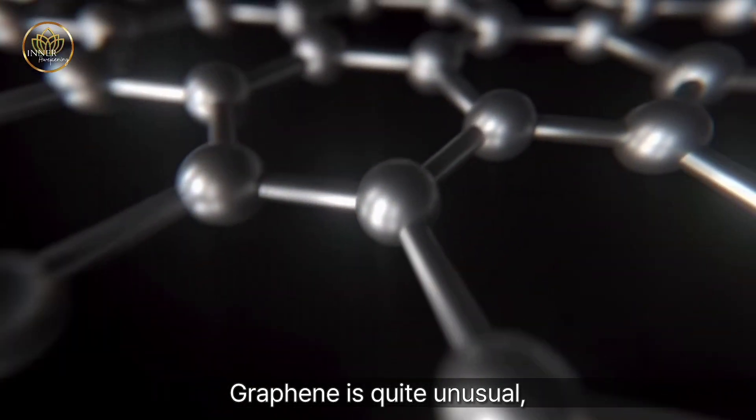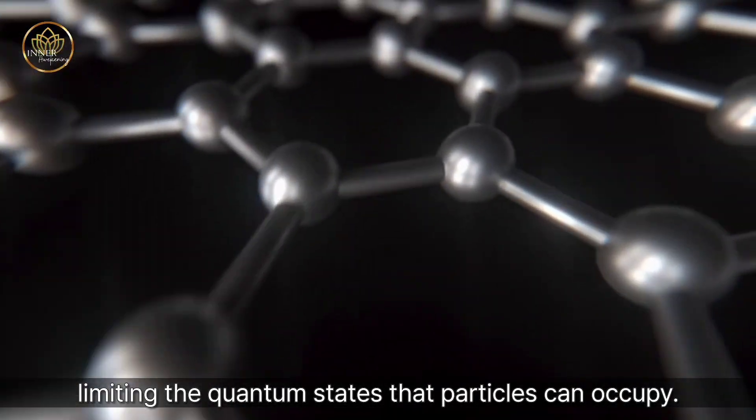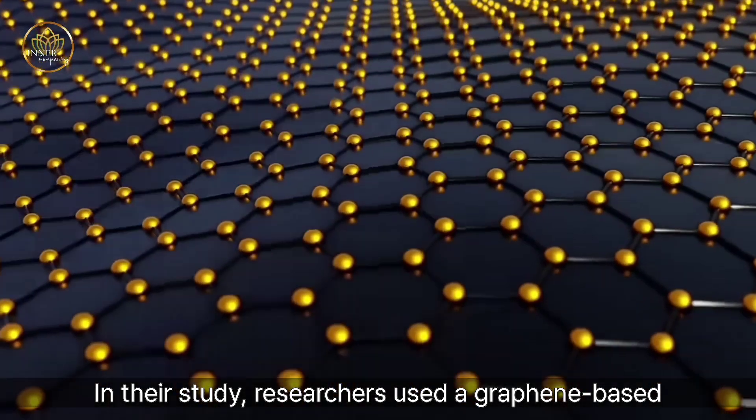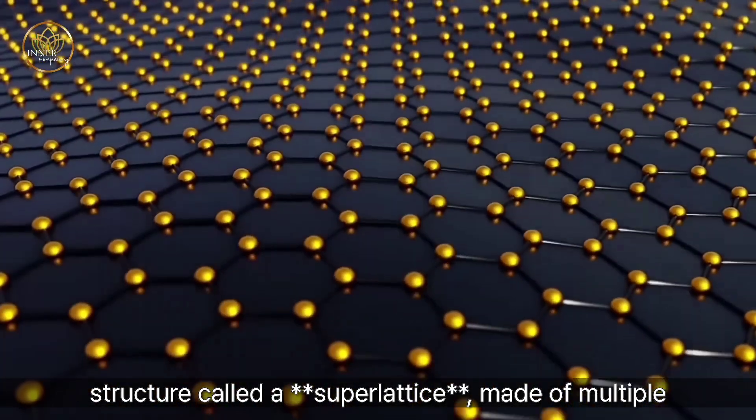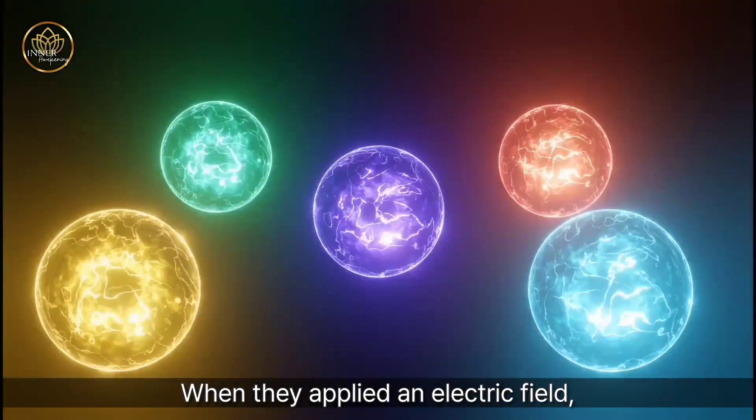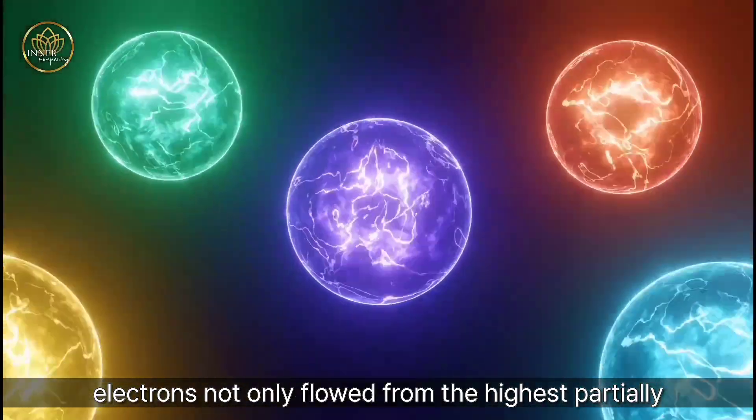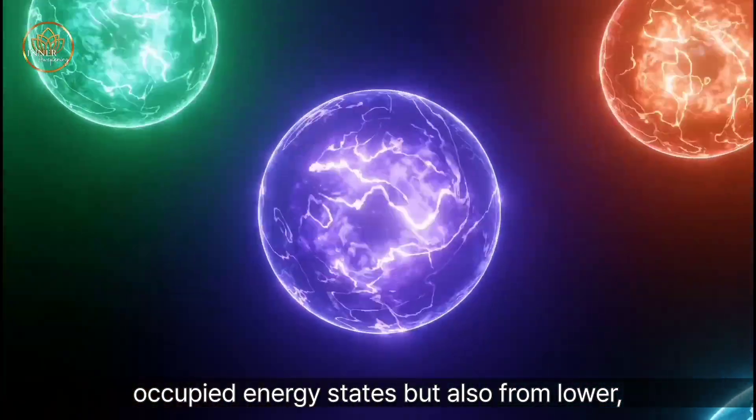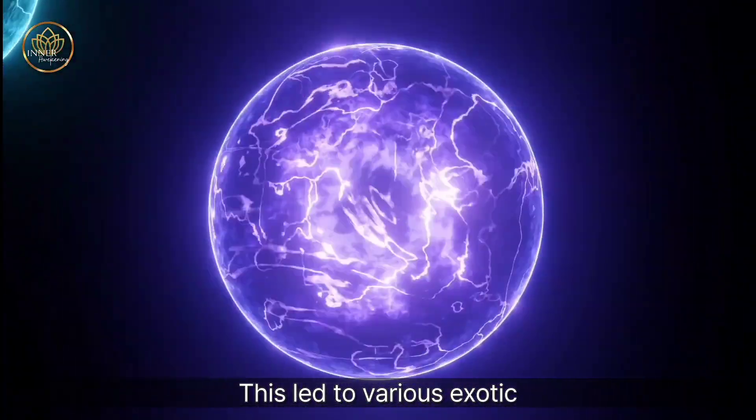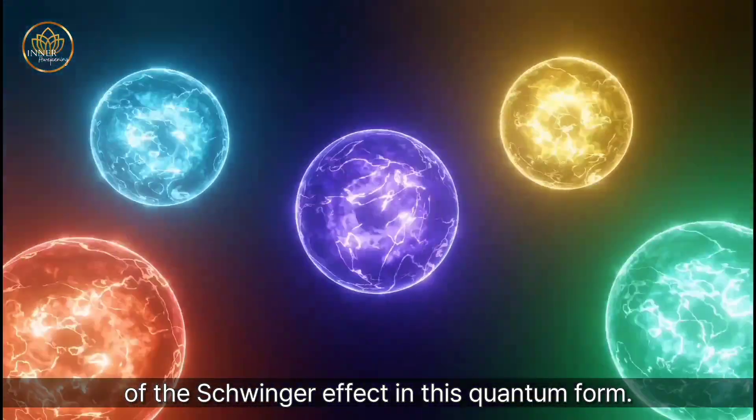Graphene is quite unusual, especially because its sheets behave as two-dimensional structures, limiting the quantum states that particles can occupy. In their study, researchers used a graphene-based structure called a superlattice, made of multiple layers of materials arranged in periodic patterns. When they applied an electric field, they observed a unique phenomenon. Electrons not only flowed from the highest partially occupied energy states, but also from lower, completely filled bands. This led to various exotic behaviors, including the first observation of the Schwinger effect in this quantum form.